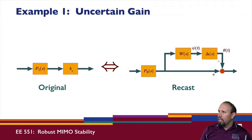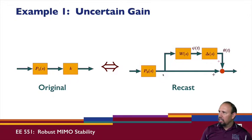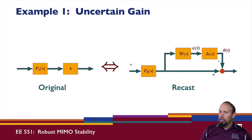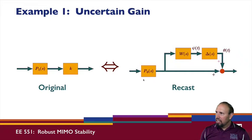So the original form had P1 and an uncertain k; we've recast it with P0 and uncertainty W * delta. We know what W is and what P0 is, so we have it in the standard multiplicative uncertainty form. Since we're working with a scalar quantity, the two multiplicative uncertainty arrangements are interchangeable. This first example shows how to recast an uncertain but bounded gain into this standard uncertain model.